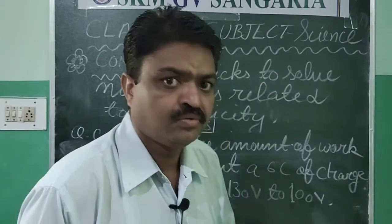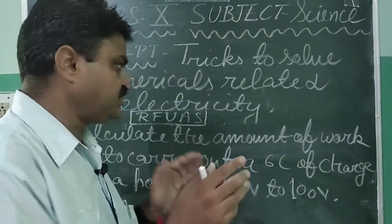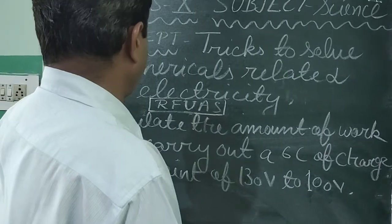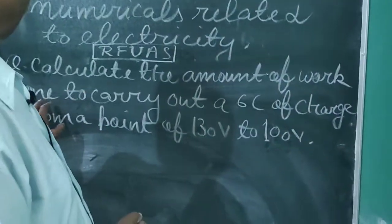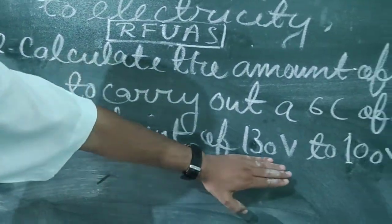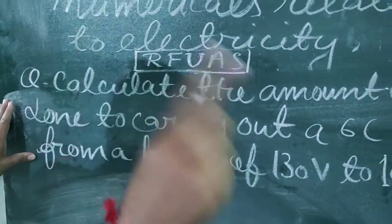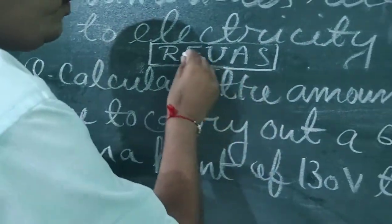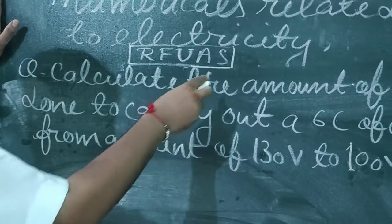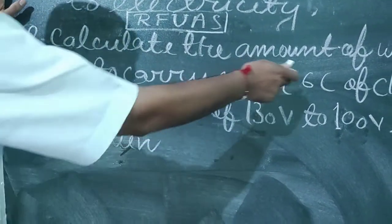So those are the formulas of electricity. Now, to calculate numericals related to physics, you should have this trick in mind. First, read the question carefully — like this question: Calculate the amount of work done to carry a charge of 6 coulombs from a point of 130 volt to 100 volt. After reading, you should find all the quantities given in the question and write them down. The charge given is 6 coulomb.